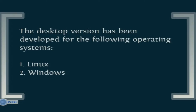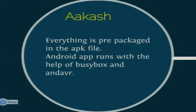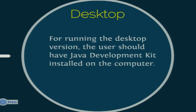Due to the issues with the Android version, we also developed a desktop version for both Linux and Windows. For Akash, there are no prerequisites — the user just downloads and installs the APK with everything bundled. For the desktop version, the user needs a Java Development Kit installed, since we used Tomcat as the server. No other prerequisites are required, and the desktop app needs no installation — just download and run.